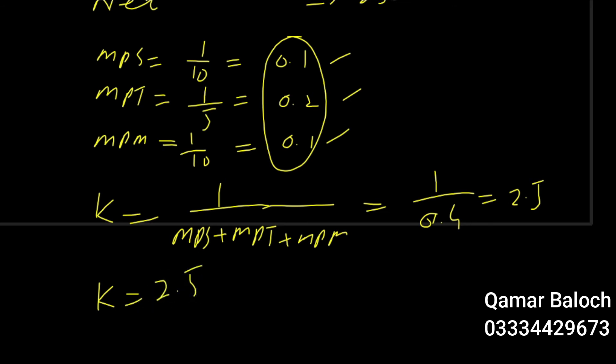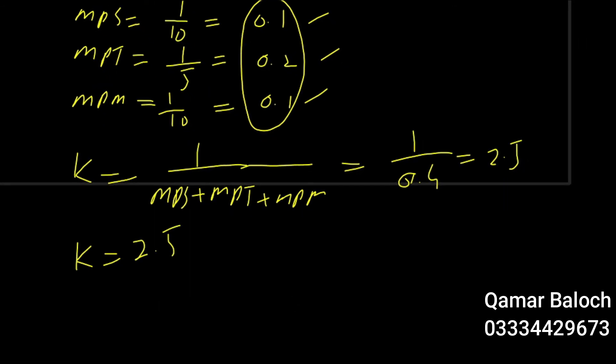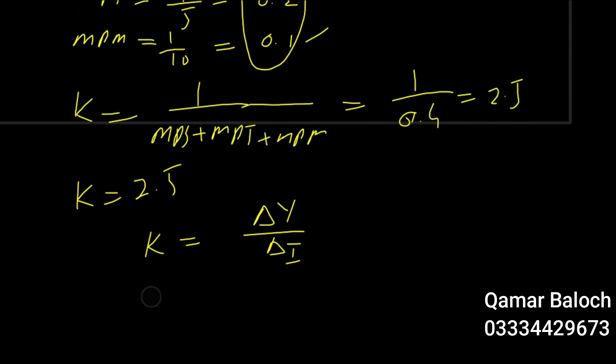Now you have to find out change in national income. So you can use another formula of multiplier that is equal to change in income over change in investment. Just put the value of multiplier K here, that is equal to 2.5.